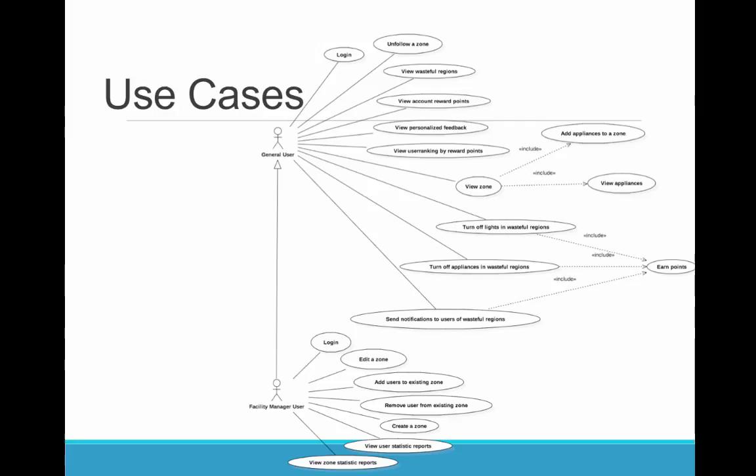In this version of the application, the user is able to earn points for positive behavior. Positive behavior entails turning off the lights in a Wasteful Region, turning off appliances in a Wasteful Region, and/or sending notifications to users of a Wasteful Region. Finally, a general user is also able to edit a zone by adding appliances.